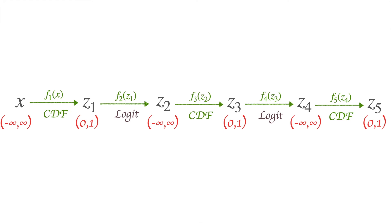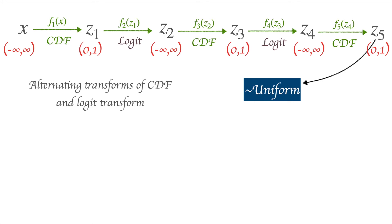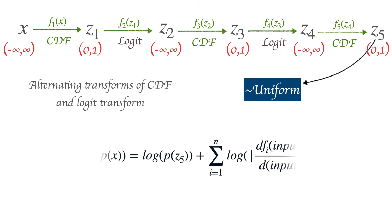This is what the entire flow looks like. We start with variable X, whose values can be anywhere from minus infinity to plus infinity. We map it using a CDF to get Z1 in [0,1], then map it back to the entire real line using a Logit function to get Z2, then use a CDF again, and so on. In the end, we want the final output to have a uniform distribution, and we can apply this formula and maximize the right-hand side, which also maximizes the log likelihood of X.